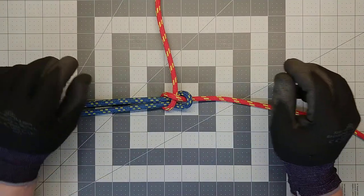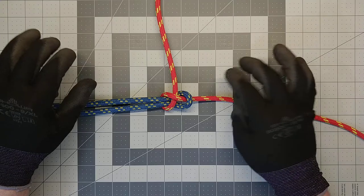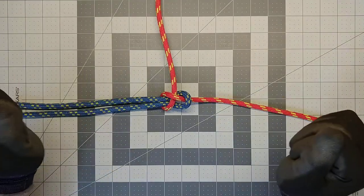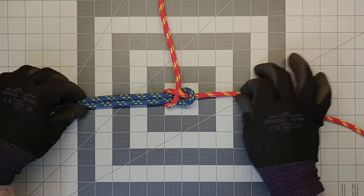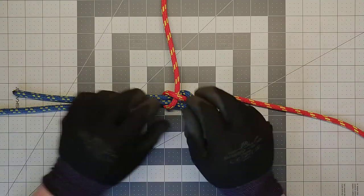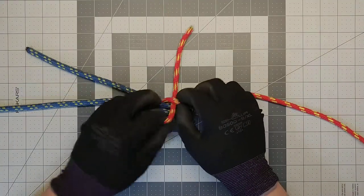Hello everyone, welcome to this episode of Firefighter Knots. Today we're going to be talking about the becket bend, used to join two ropes or a rope to a chain. Pretty easy to tie.